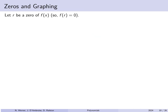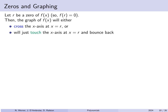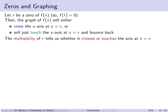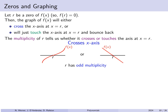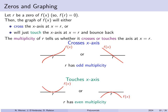If r is a zero of f(x), the graph either crosses the x-axis at x = r or just touches it and bounces back. The multiplicity determines which: if r is a root of odd multiplicity, the graph crosses the axis there. If the multiplicity is even, the graph merely touches the axis and returns to the same side.